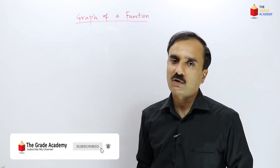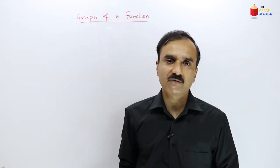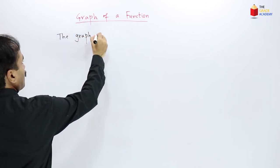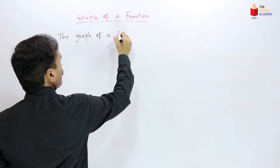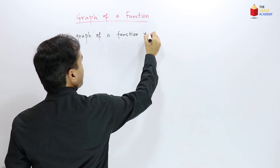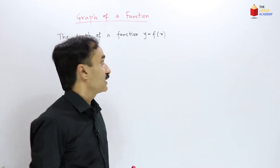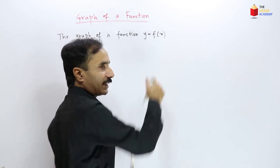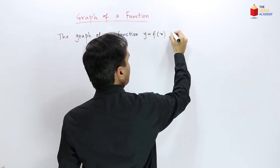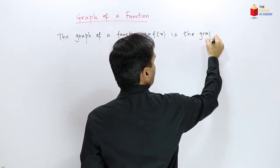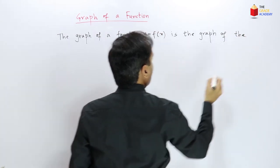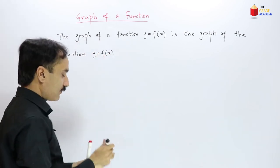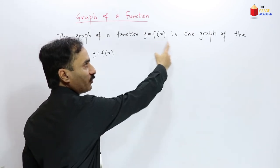We will draw the graph of that equation and that gives us the graph of the function. So the graph of a function y = f(x) — this notation we discussed in the first lecture showing that y is a function of x — the graph of a function y = f(x) is the graph of the equation y = f(x). The graph of the function is basically the graph of the equation that represents that function.